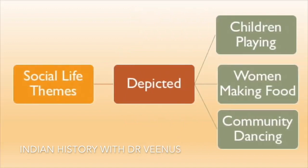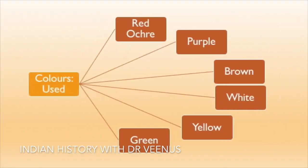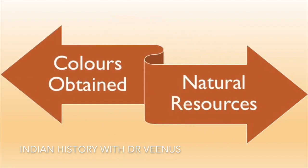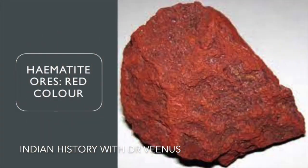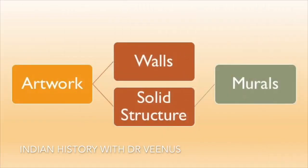Social life is well depicted with children playing, women making food, and community dancing. Various colors like red ochre, purple, brown, white, yellow and green are used. Colors were obtained from natural resources; for example, hematite ores were used for red color. The work on walls or solid structures is referred to as murals, which have existed in India since ancient times and can be dated between the 10th century BC and 10th century AD.